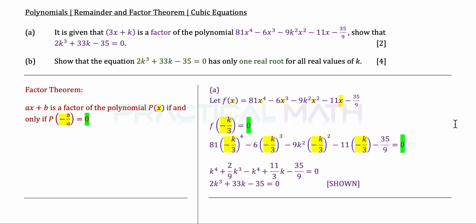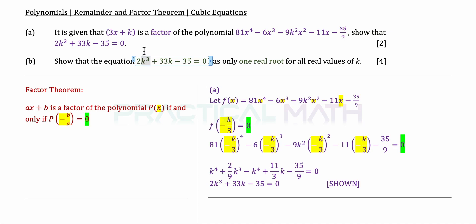Now let us move on to part B. We are supposed to show that the equation 2k cubed plus 33k minus 35 equals 0 has only one real root — meaning only one real solution. Since this is a k cubed equation, it could have up to three real roots. When they say only one real root, that means there will be one quadratic factor that has no real roots, so we will need to use the discriminant, b squared minus 4ac, and prove it is less than zero.